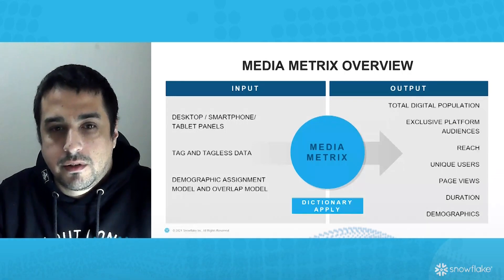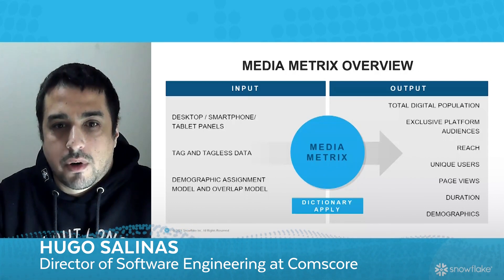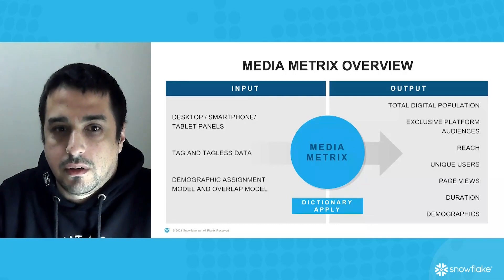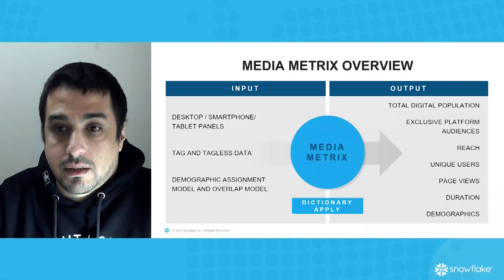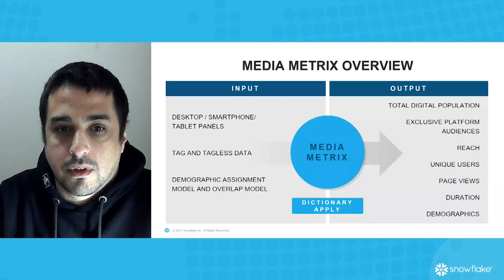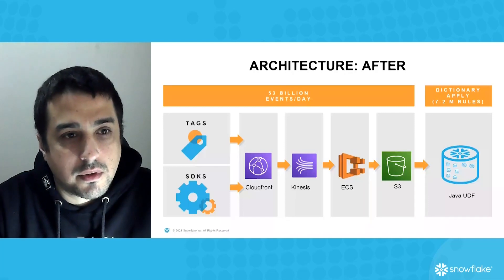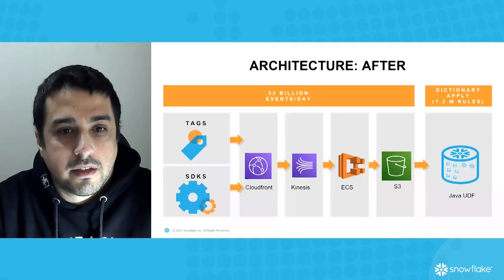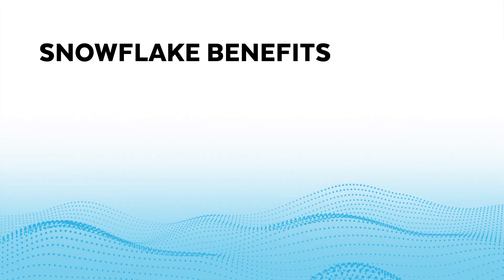We're in the business of media measurements and we provide measurements and insights to our customers. One of our main products is called Media Metrics. As you can see, we take all these inputs from things like desktop, smartphone panels, tag and tagless data, and the demographic assignment model. We process around 53 billion events per day, and we have around 7.2 million rules to calculate the dictionary.